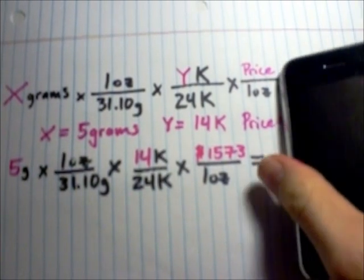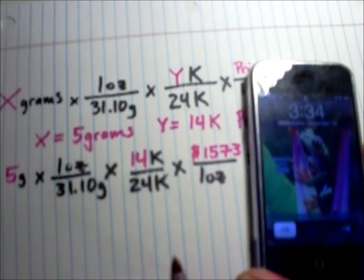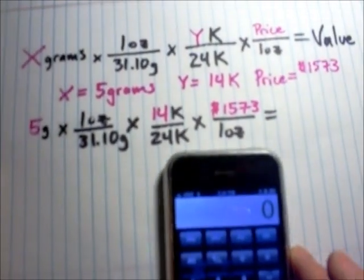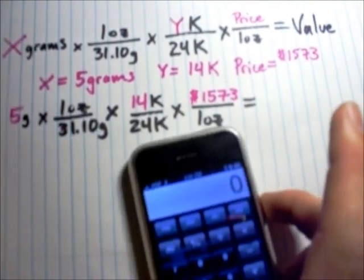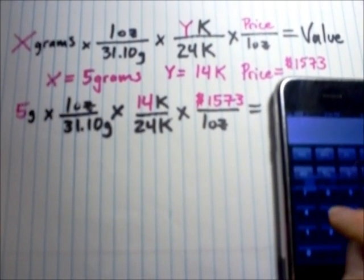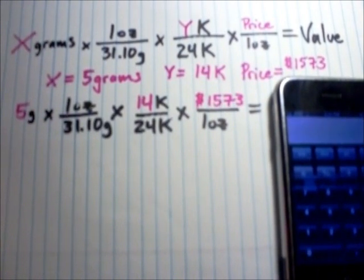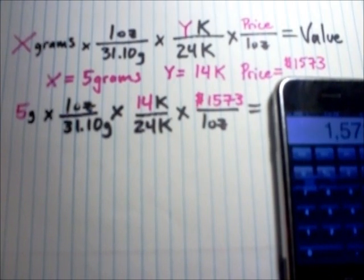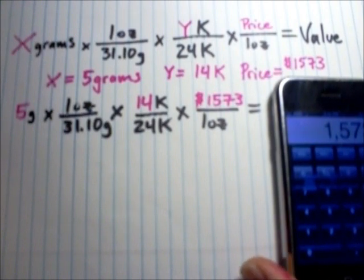All right. Let's take out my handy-dandy calculator. Let's see if I can move this up a little bit. Try to show the calculator. Sorry about all the moving around. So, we'll take 5 times 1 divided by 31.10 times 14 divided by 24 times 1573. And that should give us how much the spot price of the value of gold that we have.